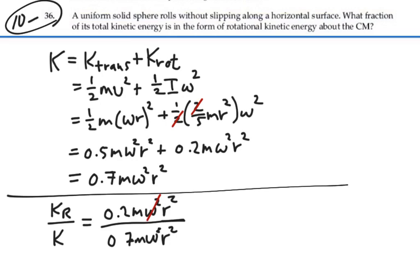The omega squareds cancel out, the m's cancel out, the r squareds cancel out, and this would be equal to point-two over point-seven, or we could say two-sevenths.